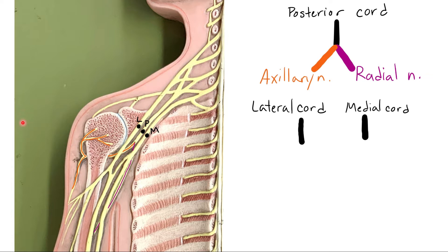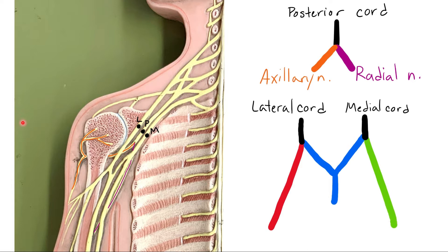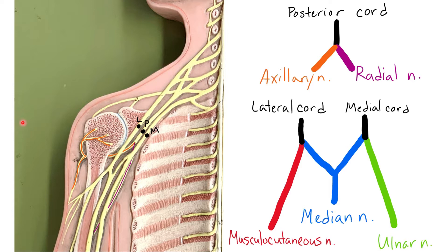The lateral cord and the medial cord contribute fibers to three different terminal branch nerves, and these three nerves form a very obvious M shape in this region. The lateral cord contributes some fibers to create the musculocutaneous nerve. Some fibers branch off the lateral cord and merge with fibers from the medial cord to form the median nerve. The medial cord then contributes the rest of its fibers to the ulnar nerve. Those three nerves make up this M shape on our model.